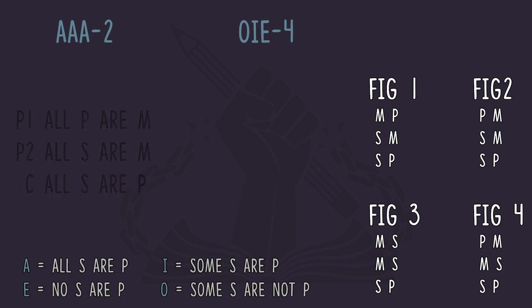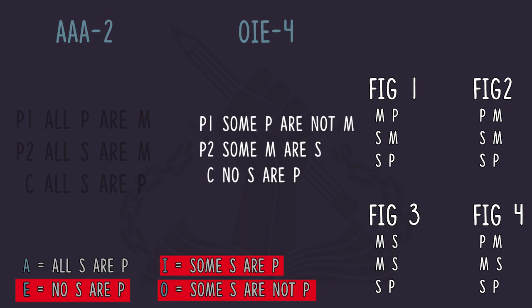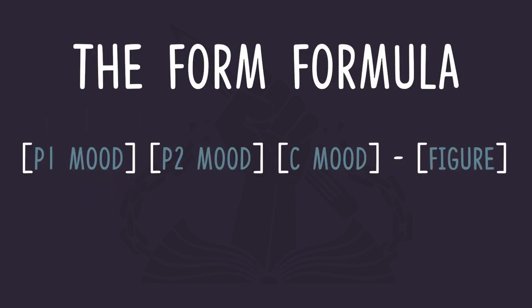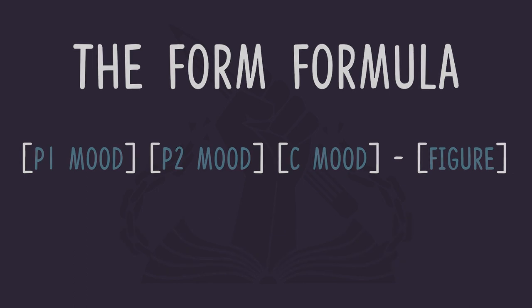Now let's do OIE-4. Figure four syllogisms have the middle term in the predicate position in the first premise and in the subject position in the second premise. Now the moods: mood O is 'some S are not P,' mood I is 'some S are P,' and mood E is 'no S are P.' Applying these, we get: some P are not M; some M are S; no S are P. OIE-4 will always result in this argument. Using this method of naming categorical syllogisms, we can represent in shorthand each of the 256 possible arrangements of moods and figures, and from here on out we will use this method of naming the form of categorical syllogisms.